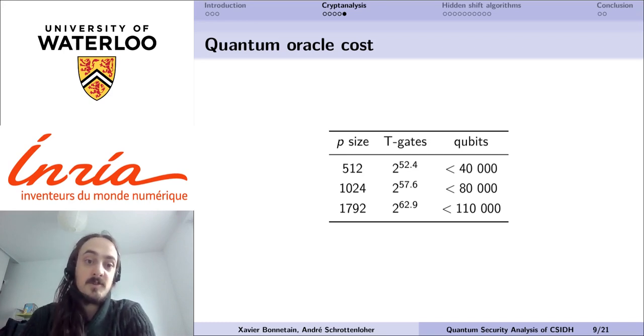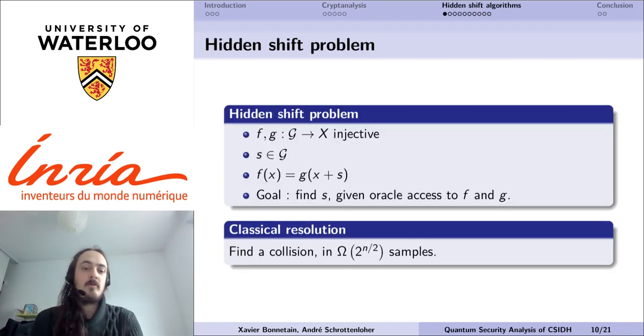Now that we have constructed our quantum oracle, we want to solve our hidden shift problem, that is, given black box access to these two quantum oracles that correspond to the evaluation of the group action, find the secret group values that link them both. In other words, we have two functions, f and g, which are equal up to a shift on their input, and we want to know the value of this secret shift.